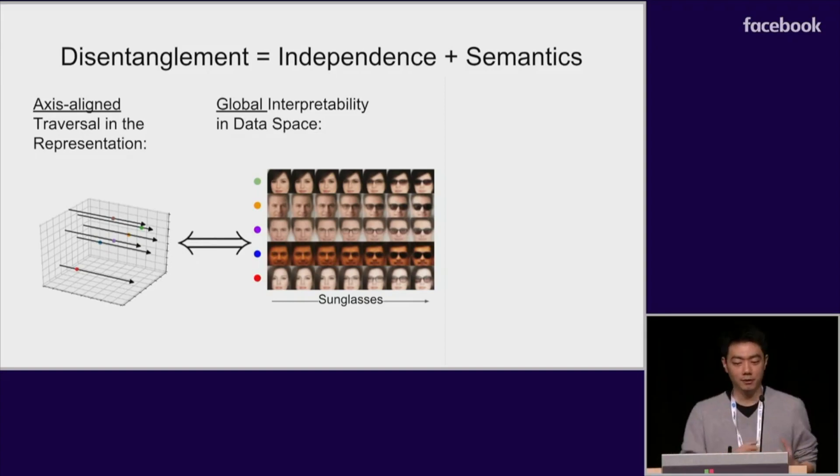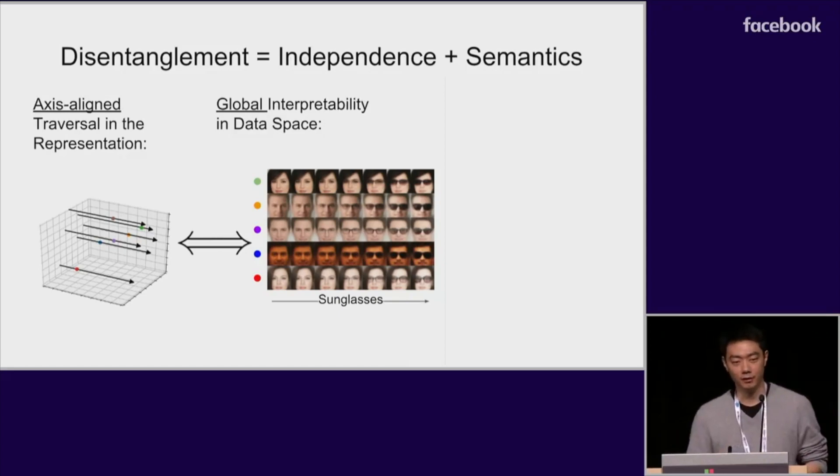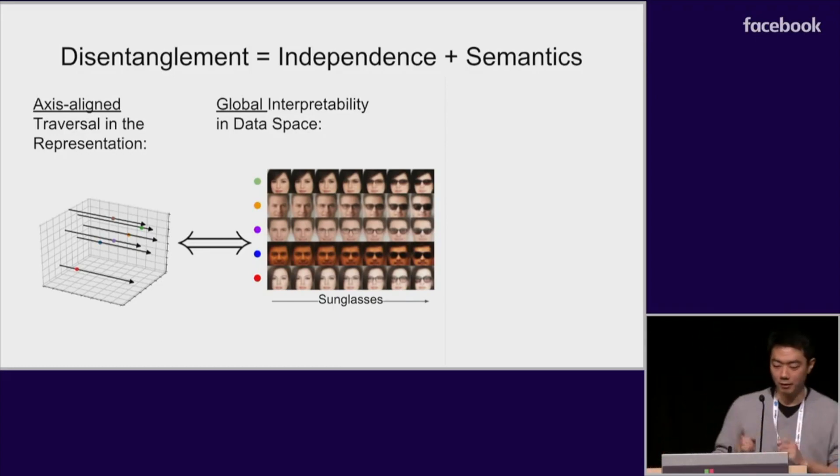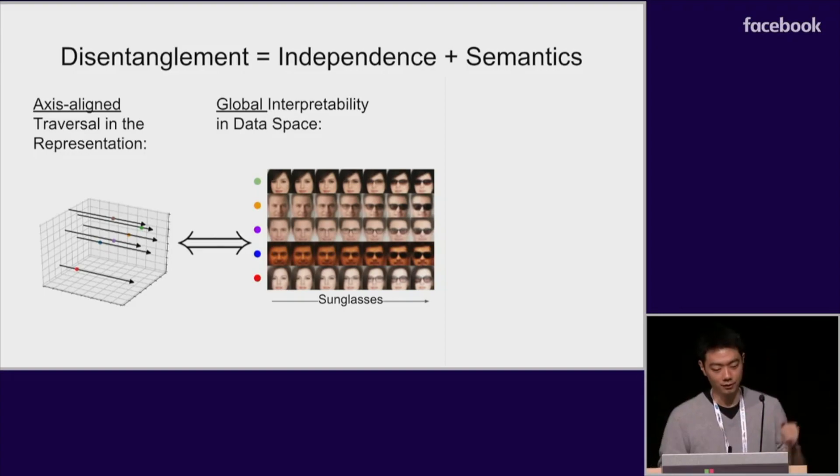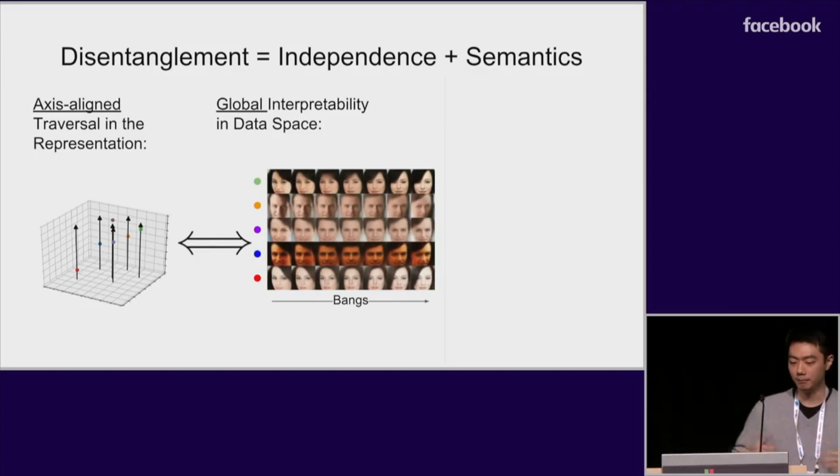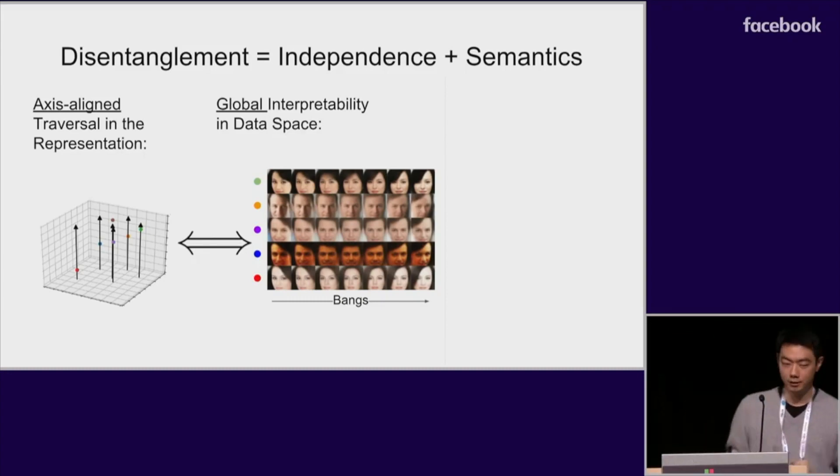In our work, our ultimate goal is to learn a representation that has a distinct meaning associated with each dimension and where each dimension can be changed independently. For example, this model that was trained using our approach aligns the notion of glasses to a single axis so that traversing along this axis controls the presence or transparency of glasses across all faces. Another dimension changes the orientation of the hair's bangs without changing their identity or any other features.